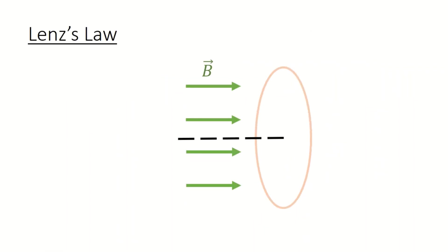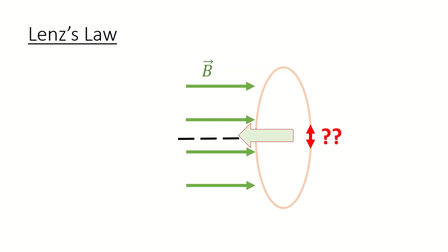To understand Lenz's law, let's take a look at this example. Suppose you have a magnetic field directed to the right. If this magnetic field increases, there will be an induced emf and induced current in the conducting loop. The direction of the induced current is such that its magnetic field opposes the change — the magnetic field increased to the right, so the induced current should have a magnetic field directed to the left. You can use the right-hand rule to prove that the induced current should be in this direction. If the magnetic field no longer changes, the induced current will drop to zero.